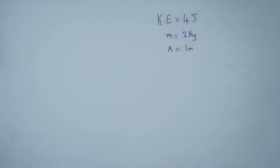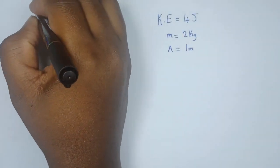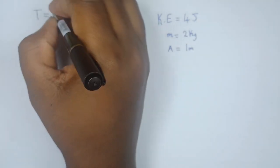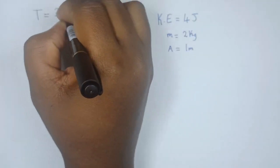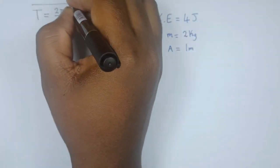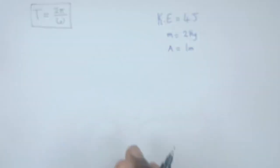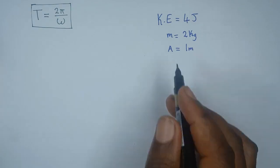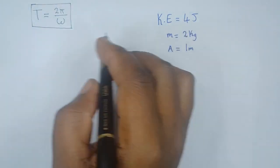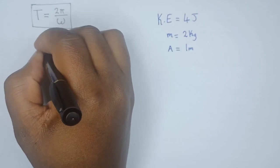Now, how do we calculate the time period? We know that time period is given by T = 2π/ω. This is the formula we'll be using to find the period. So far, what do we know? We know that we have been given kinetic energy, so kinetic energy KE is given by the formula ½mv².